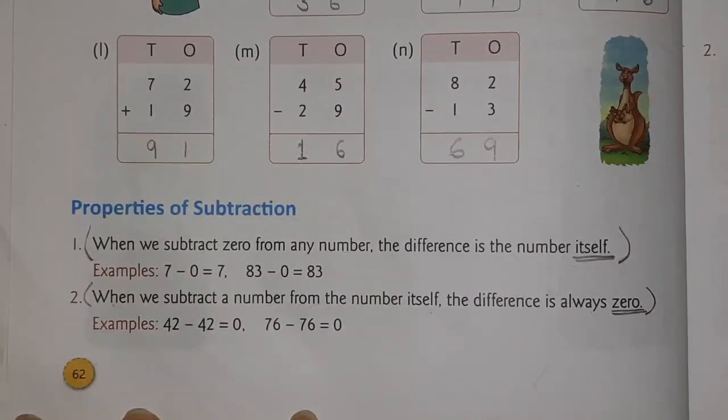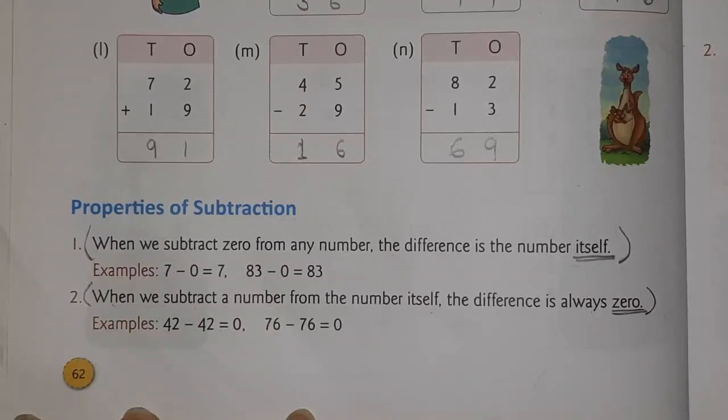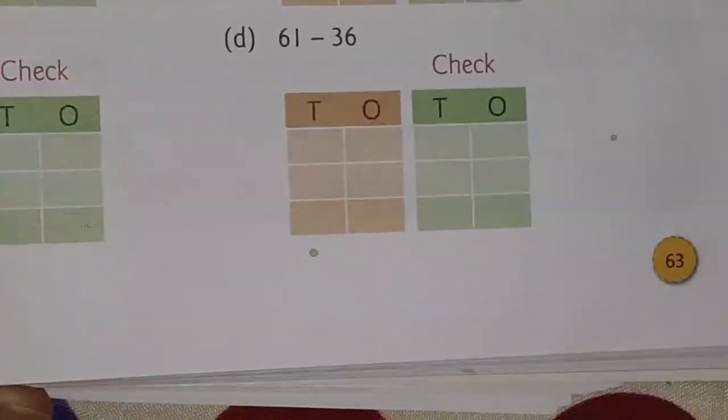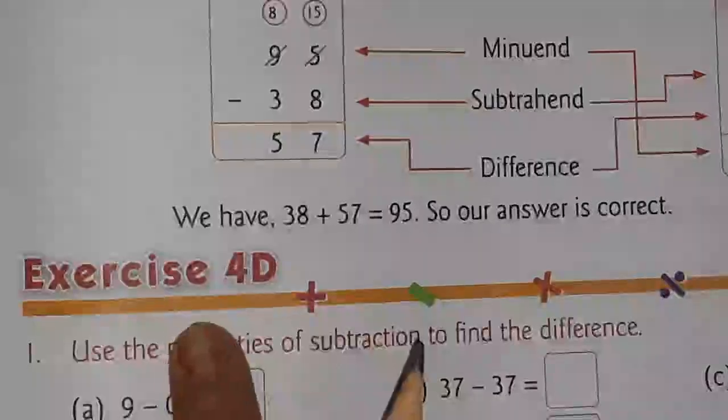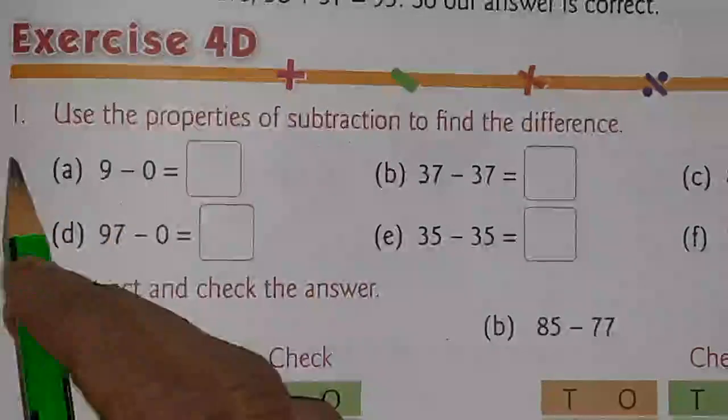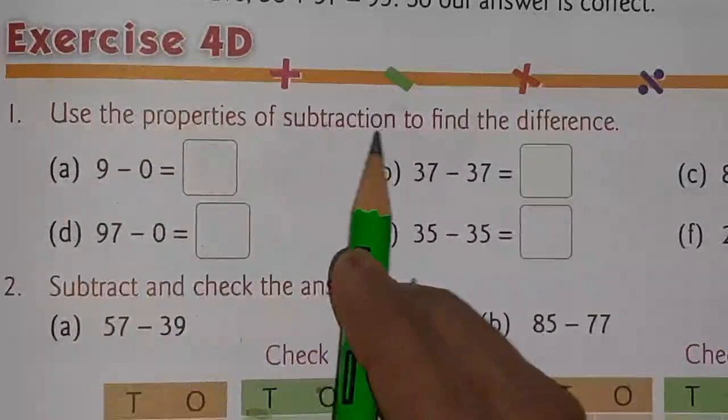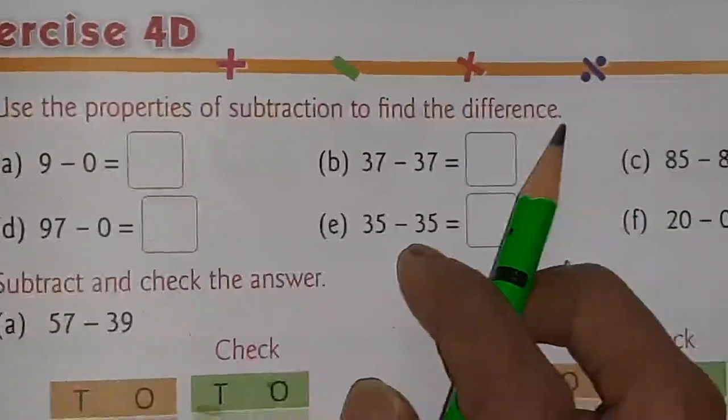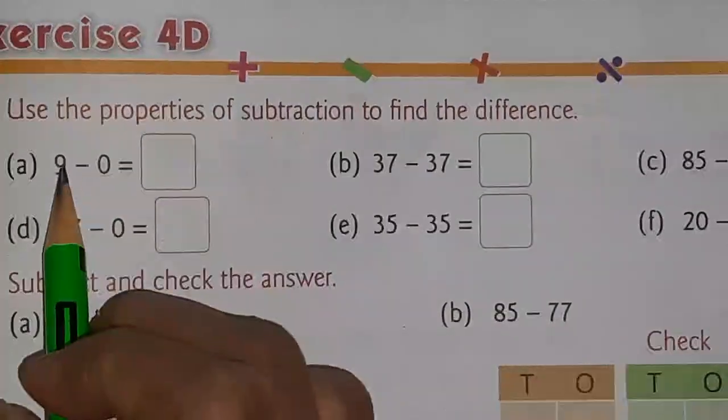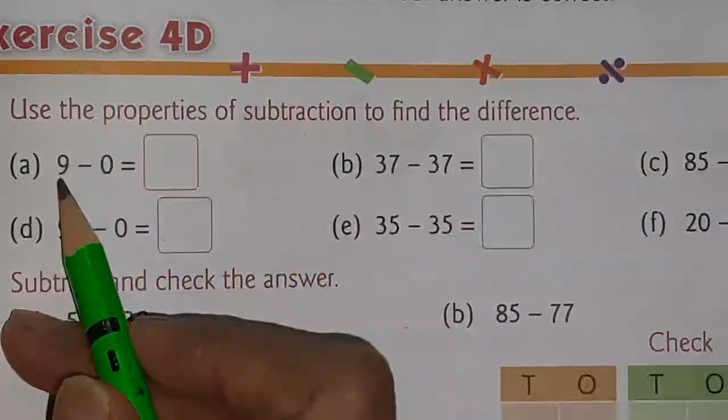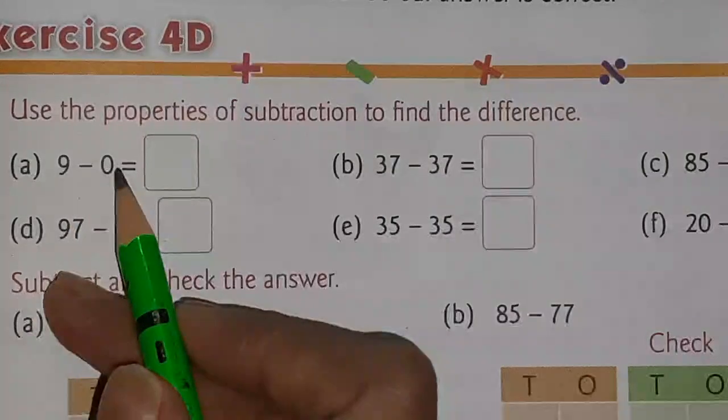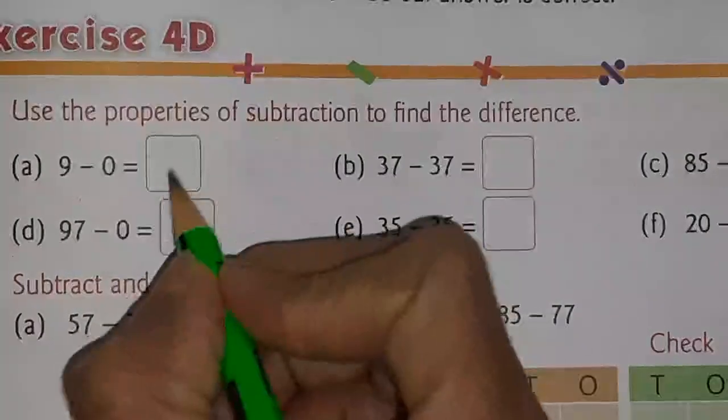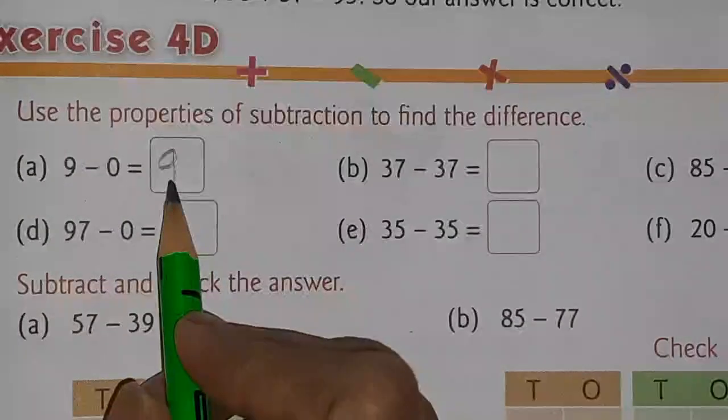Now, you have to open page number 63. On page number 63, there is exercise 4D. We are going to solve only first question. So, this is page number 63, Exercise 4D. And we are solving question number 1. Use the properties of subtraction to find the difference. First one we'll see 9 minus 0. So, you can open 9 fingers and cut 0. 0 cutting means nothing you have to cut. Your fingers will remain same. That is 9. So, 9 is your answer.